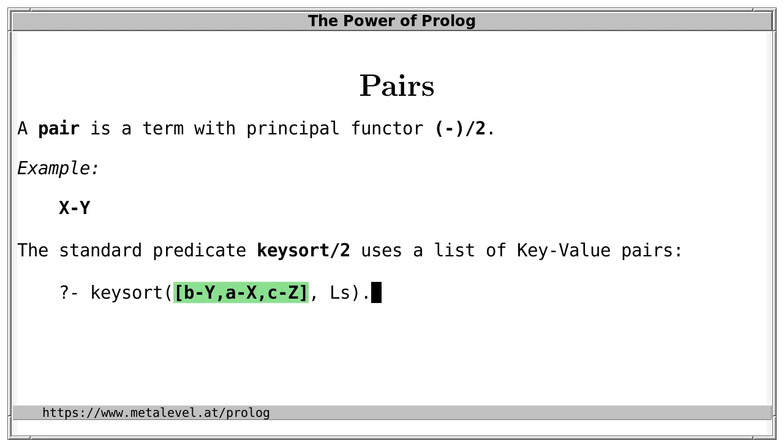For example, if you sort these pairs by their keys, then we get this list of pairs LS.